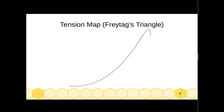Here we have an example of what a traditional short story might look like. If you think about this as a tension map, as the story moves along, tension rises until it hits a peak or climax, and then tension falls again at the end of the story.